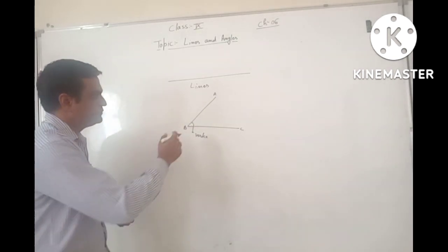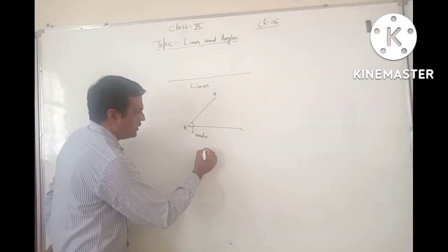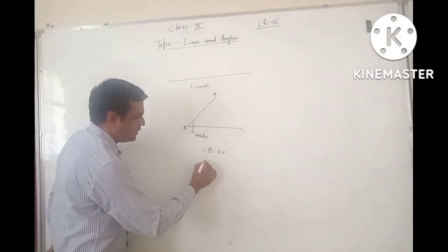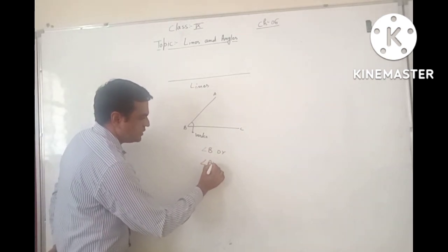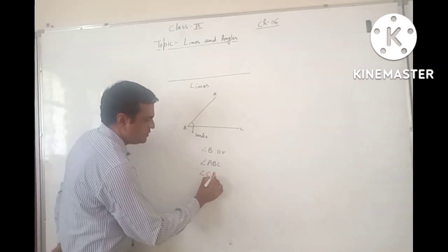This is known as the Angles. We can write Angle as Angle B, or we can also write as Angle ABC, or we can also write as Angle CBA.